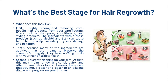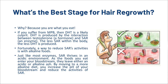Second, clean up your diet. At first this may mean removing alcohol, dairy, and other inflammatory foods. We advocate moving closer to an alkaline diet as you progress on your journey. If you suffer from male pattern baldness, then DHT is a likely culprit. DHT is produced by the interaction between testosterone and 5-AR or 5-alpha reductase. The less 5-alpha reductase within the body, the less DHT is produced. A way to reduce 5-AR's activity is with alkaline foods. Just like most enzymes, 5-AR thrives in an acidic environment. As the foods you eat enter your bloodstream, they leave either an acidic or alkaline ash. By moving to a more alkaline diet, you increase the pH of your bloodstream and reduce the activity of 5-alpha reductase.